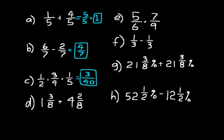On D, we have mixed numbers to add. Add the whole number parts first: one and four is five. Then add the fraction parts: three-eighths and two-eighths — three plus two is five over eight. The answer is five and five-eighths.